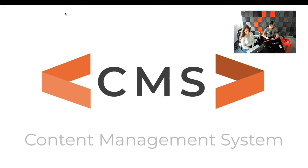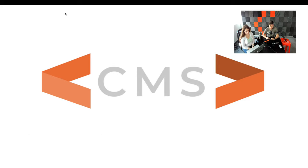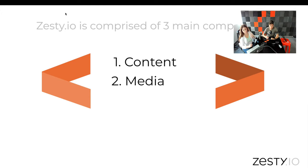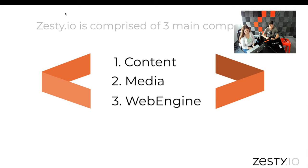As a Content Management System, we're comprised of three major components. The first is obviously content — you can't be a CMS without content. The second is media; we have something we call Micro Dam, so you can upload images, videos, and whatnot. And the third is WebEngine, which allows you to produce websites and distribute content over the Internet.